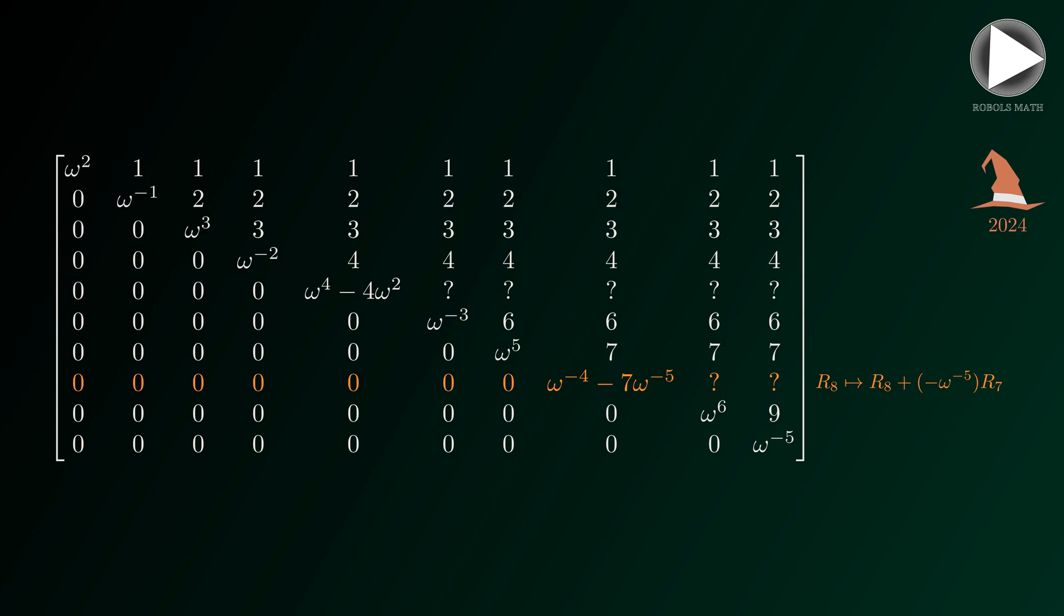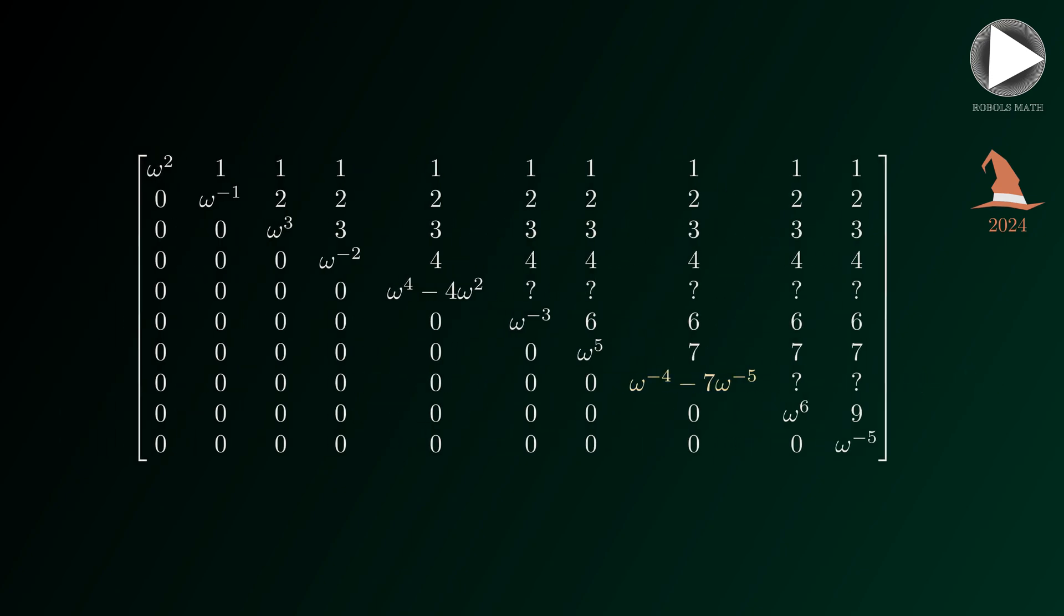Thus, the element in the diagonal in the eighth row is omega to the negative four minus seven times omega to the negative five. And now we finally have a triangular matrix that we want.